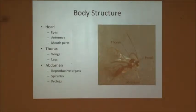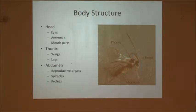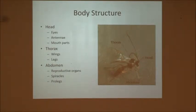So we'll talk about body structures. Insects have an exoskeleton and three different parts that make up their body structure. That's the head, which is made up of the eyes, the antennae, and its mouthparts. You have the thorax, which is where the wings and legs are attached. And then you have the abdomen, which contains the reproductive organs, spiracles, and prolegs. So head, thorax, and abdomen — three different compartments, basically.